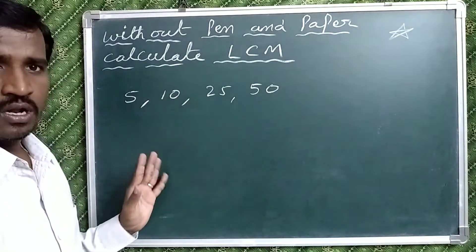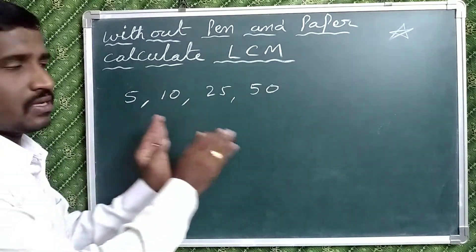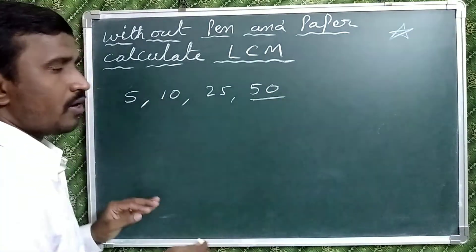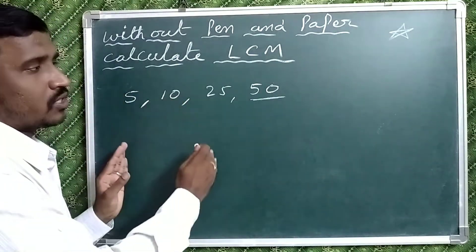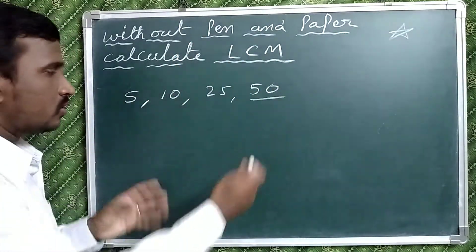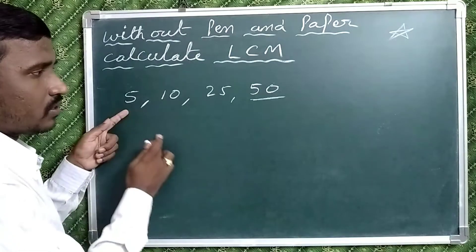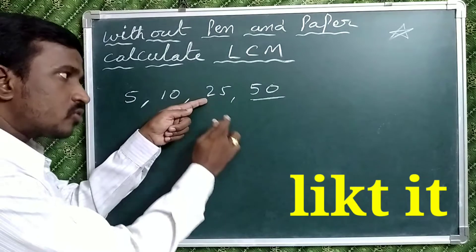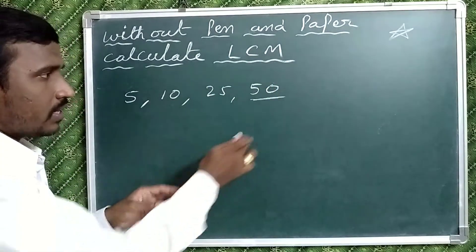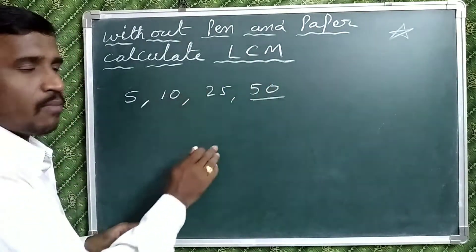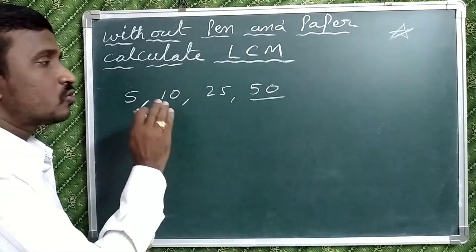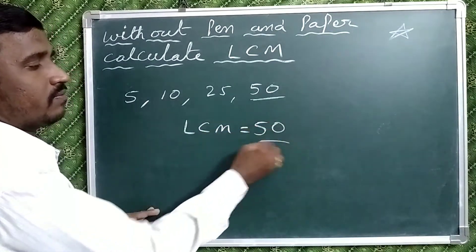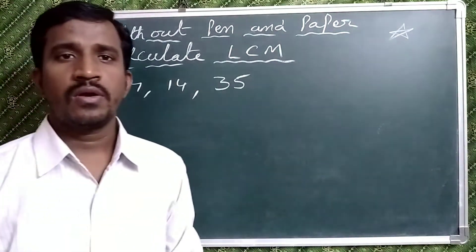Now observe one more example: 5, 10, 25, and 50. Select the highest number — which is 50. Now check whether the rest of the numbers are factors of 50 or not. Here 5 is a factor of 50, 10 is also a factor of 50, and 25 is also a factor of 50. So 50 is a multiple of all the rest of the numbers, therefore the LCM will be 50.